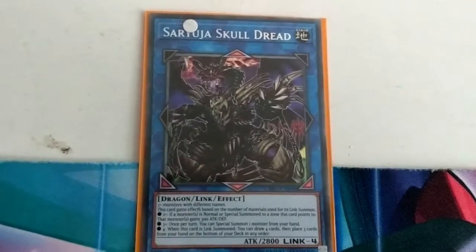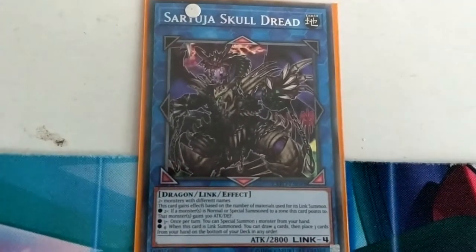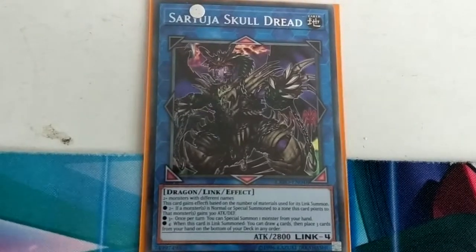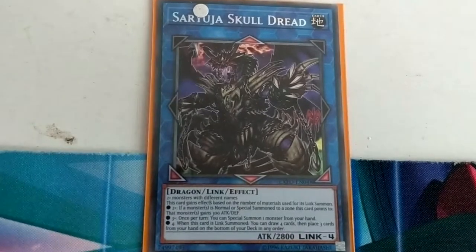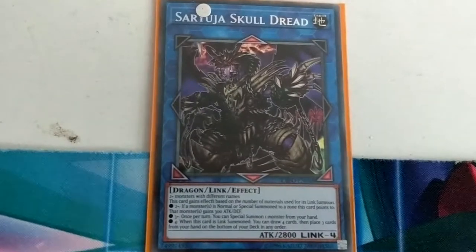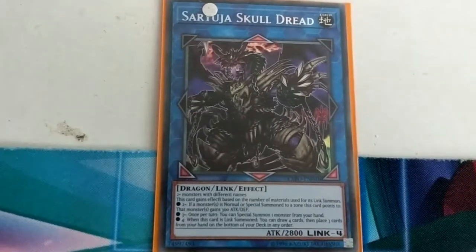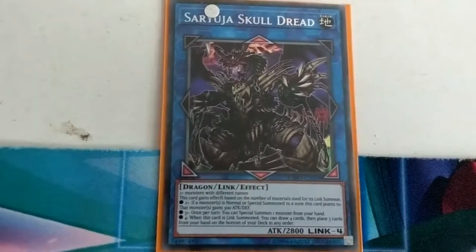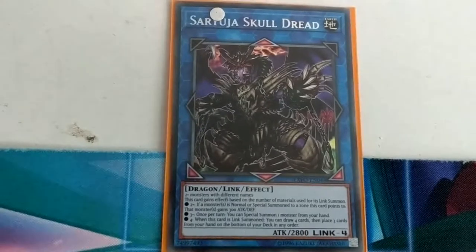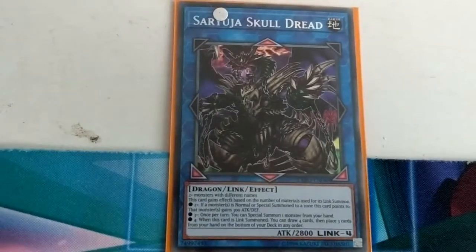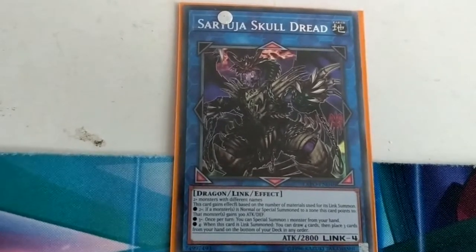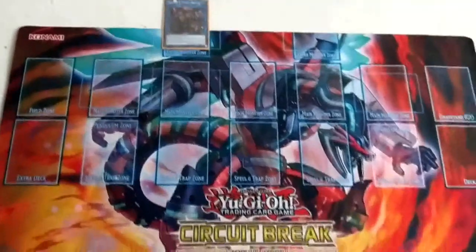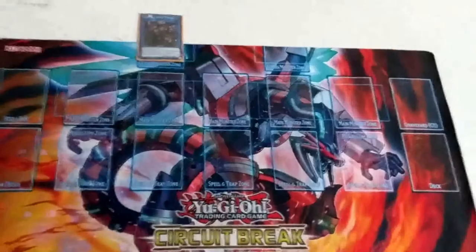It's called Saryuja Skull Dread. Let's read that effect. This card gains effects based on the number of materials used for its link summon. Two-plus: if a monster is normal or special summoned to a zone this card points to, that monster gains 300 attack and defense. Three-plus: once per turn, you can special summon one monster from your hand. Four-plus: when this card is link summoned, you can draw four cards, then place three cards from your hand on the bottom of your deck in any order. As you've seen there, it has a once per turn clause.